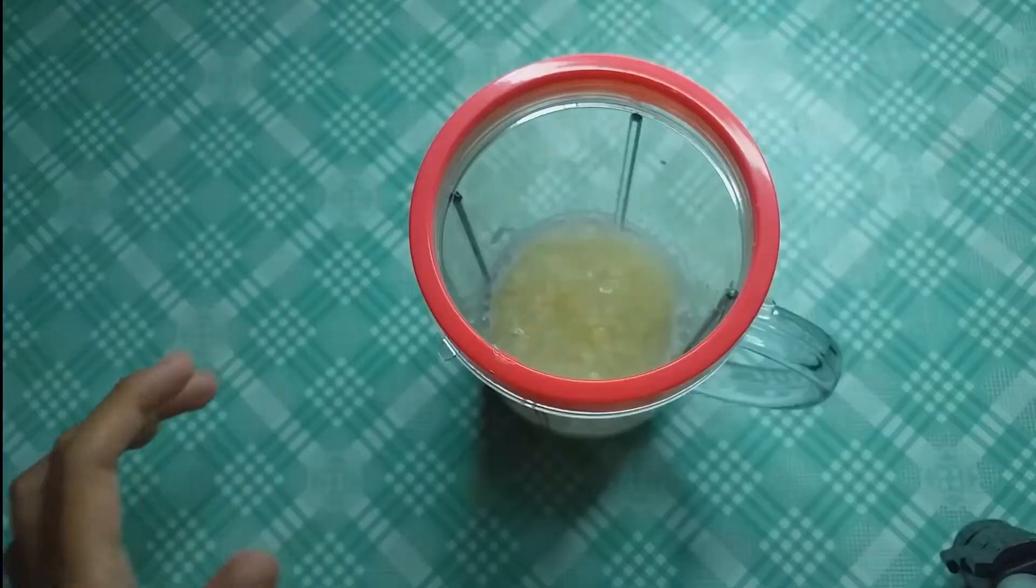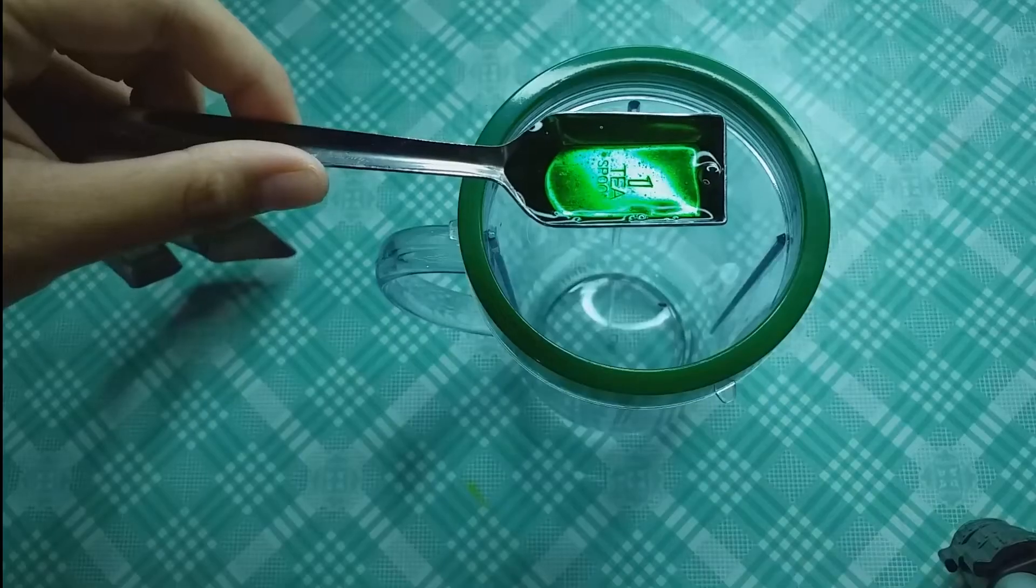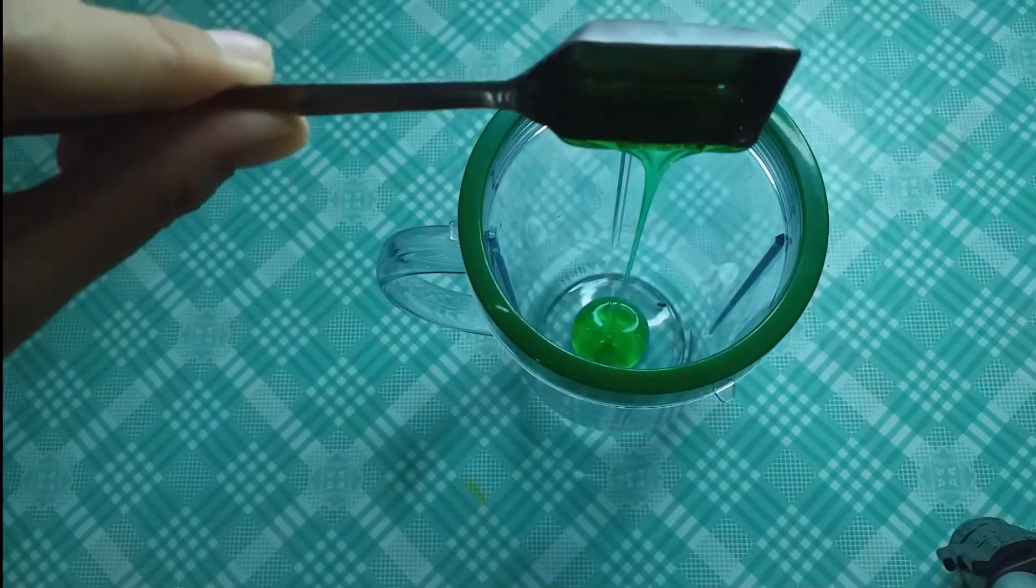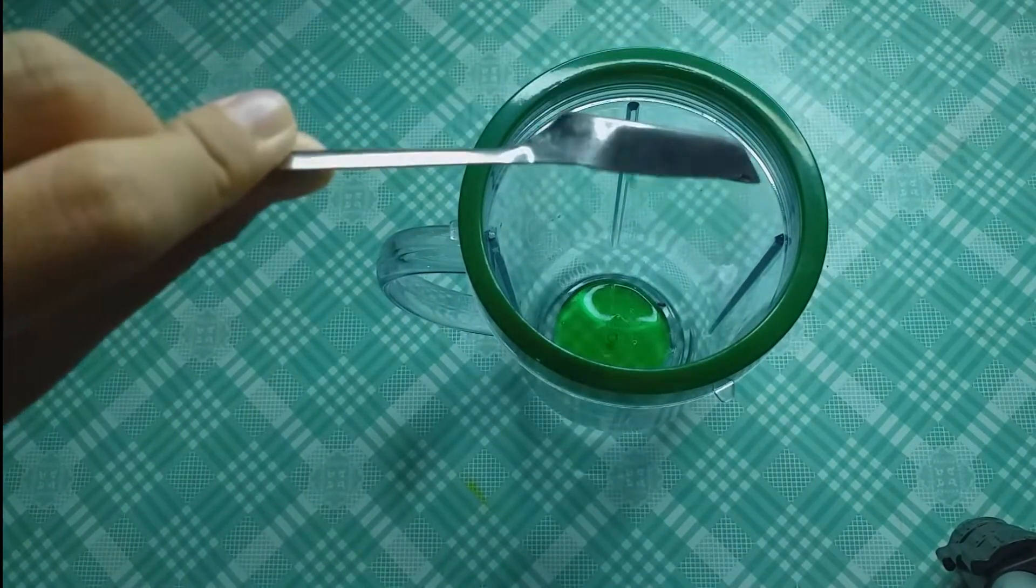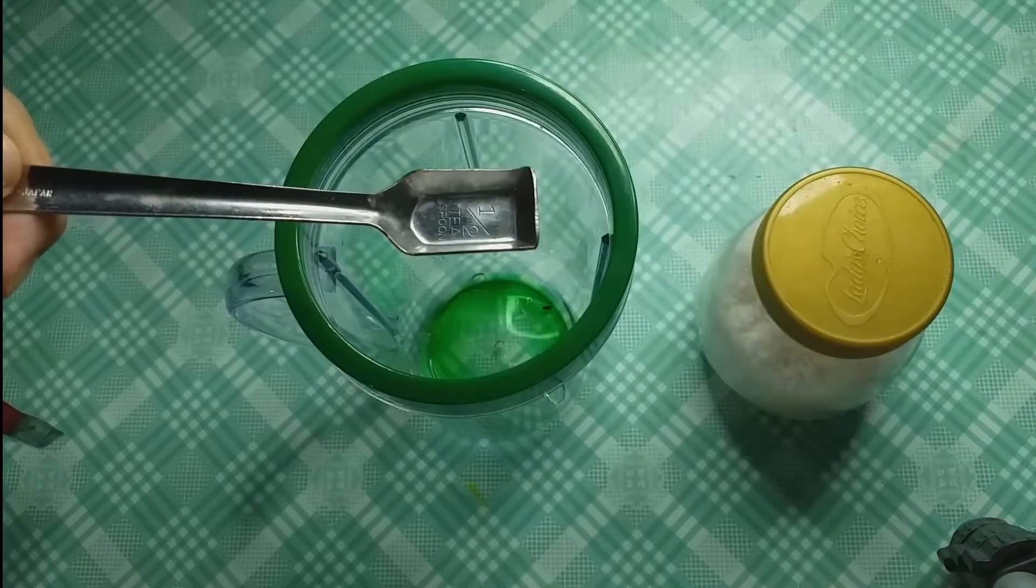Pour the mixture into a plastic cup. Mix one teaspoon of liquid dish washing soap with one-fourth teaspoon of salt in a plastic cup.